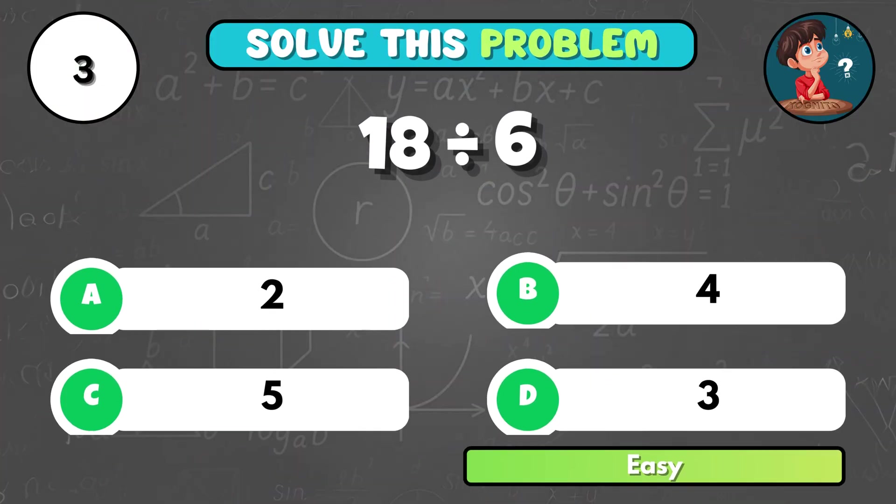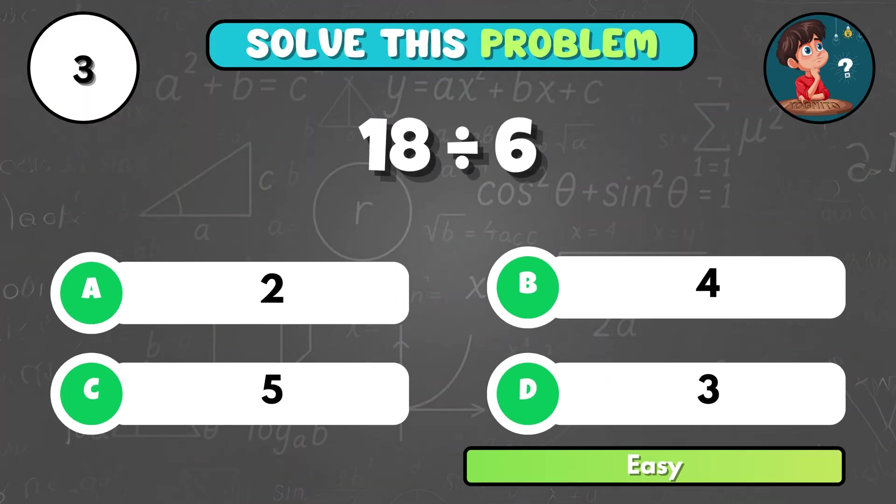If you divide 18 by 6, what do you get? You get D, 3.